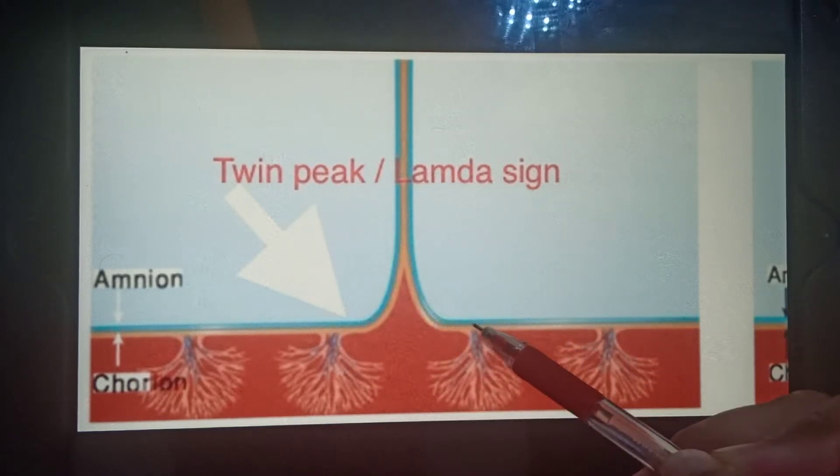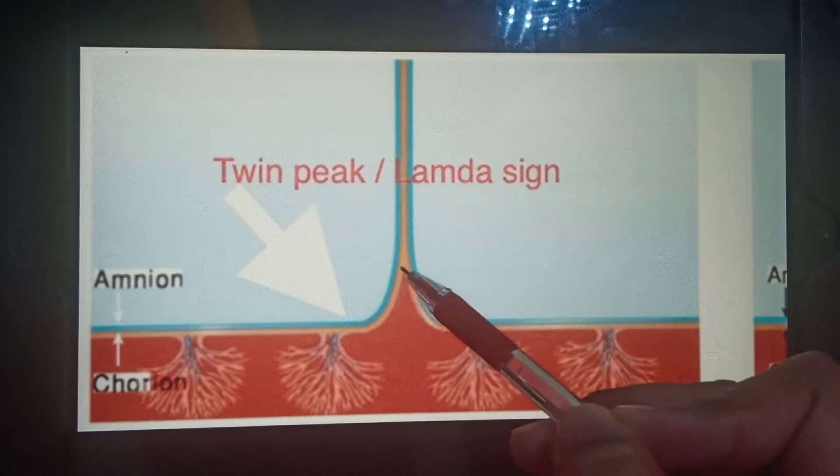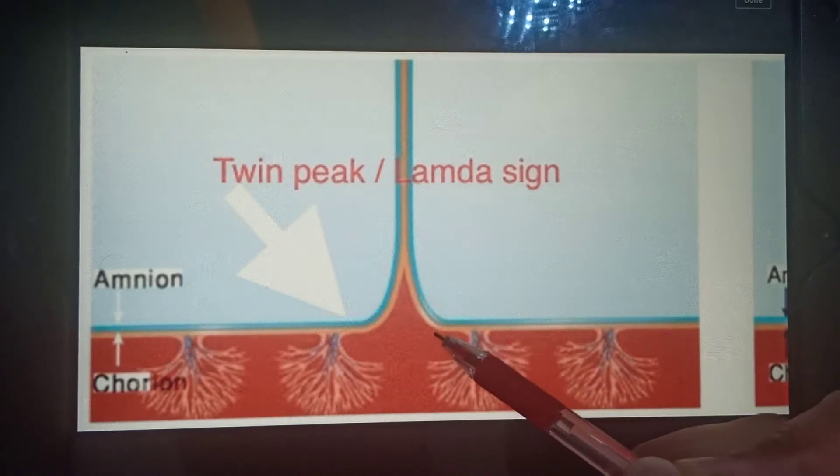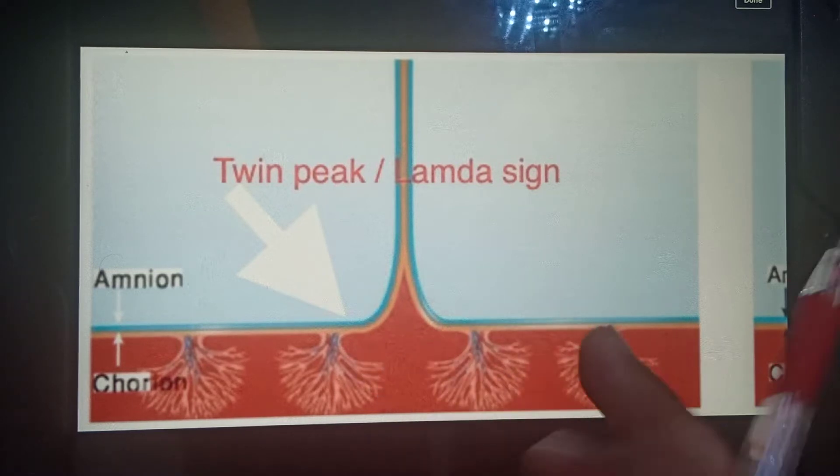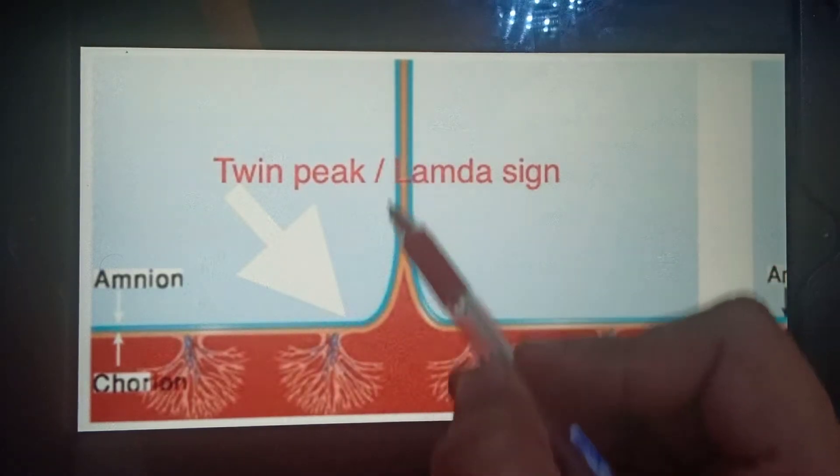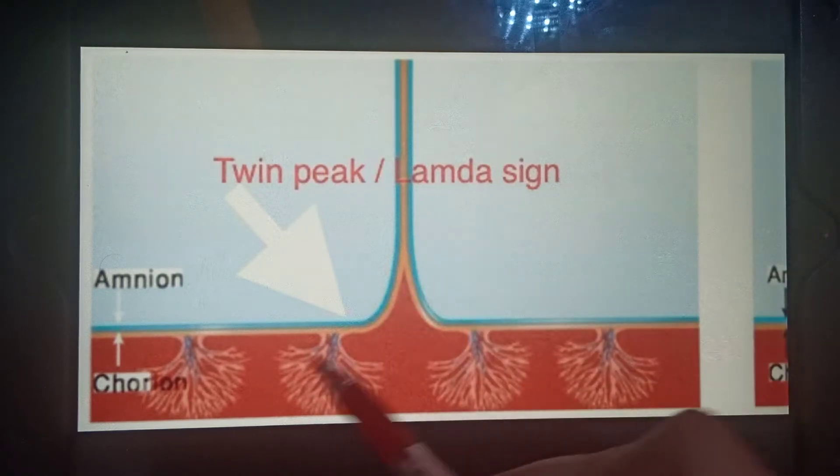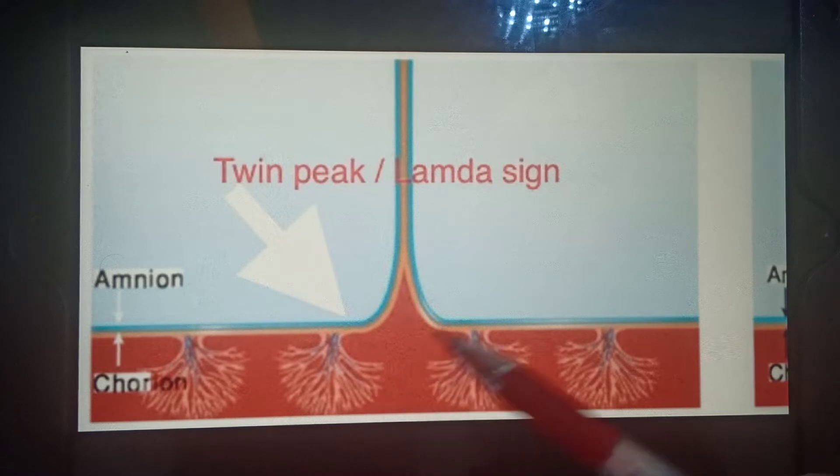When there are two amnion layers and two chorion layers, this is diamniotic and dichorionic - both are two in number. This sign looks like Lambda, so this is the Lambda sign and it is seen in dichorionic diamniotic twins.